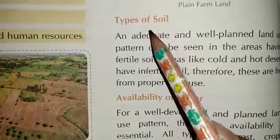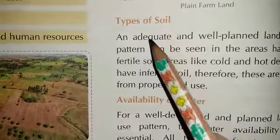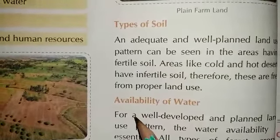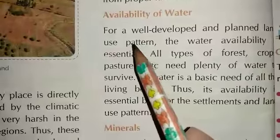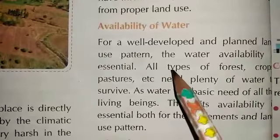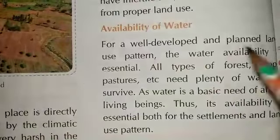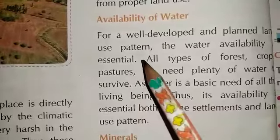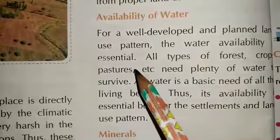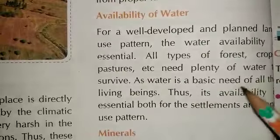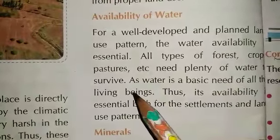Hello dear students. In previous videos you have studied about types of water. Now the next topic is availability of water. For a well-developed land use pattern, a very well-developed practice field and agricultural land, water availability is very necessary. Water availability — the availability of water — is absolutely essential.